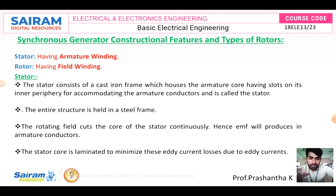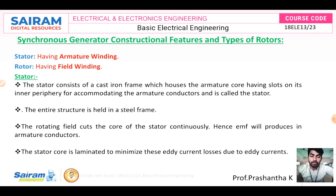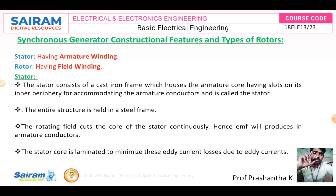If you consider a DC generator, the armature conductors are in the rotor. The field is constant, and there is sparking, brush contact drops, and copper losses — so many losses in the DC generator. That's why the synchronous generator type is used in power stations, because more power generation and more power requirement is needed.